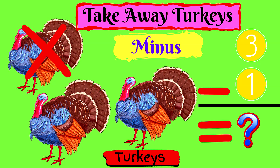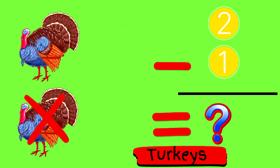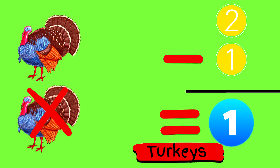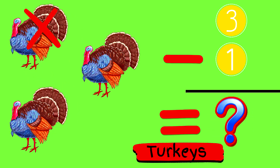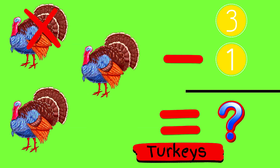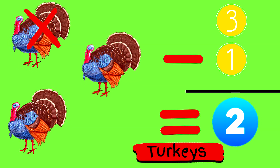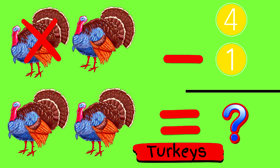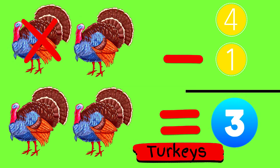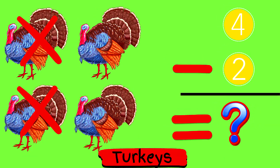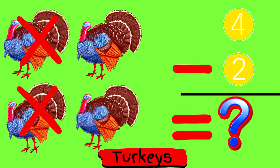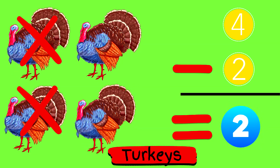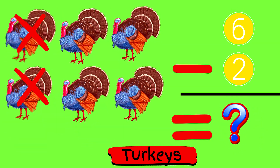Let's subtract turkeys. Two turkeys minus one turkey equals one turkey. Three turkeys minus one turkey equals two turkeys. Four turkeys minus one turkey equals three turkeys. Four turkeys minus two turkeys equals two turkeys. Six turkeys minus two turkeys equals four turkeys.